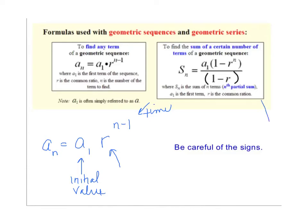Most of these formulas you'll have memorized just because you use them a lot. To find the sum, the hardest thing is to be careful of the signs and making sure you're putting parentheses around the correct thing. You can do these in the calculator — be sure to use parentheses. There will be some examples on the next screen.